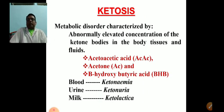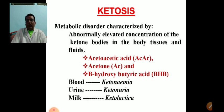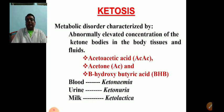Ketosis is a metabolic disorder characterized by an abnormally elevated concentration of ketone bodies in body tissues and fluids. The commonly encountered ketone bodies are acetoacetic acid, acetone, and beta-hydroxybutyric acid. When these ketone bodies appear in blood, we call it ketonemia; in urine, ketonuria; and in milk, ketolactica. Whenever there is abnormal elevation of ketone bodies in any biological fluid, the animal is showing ketosis.